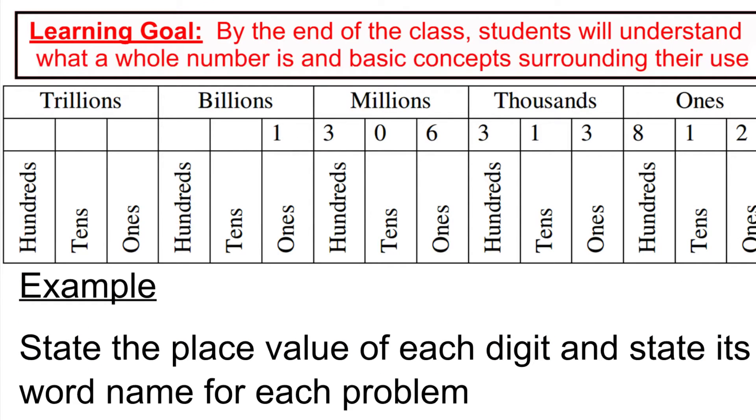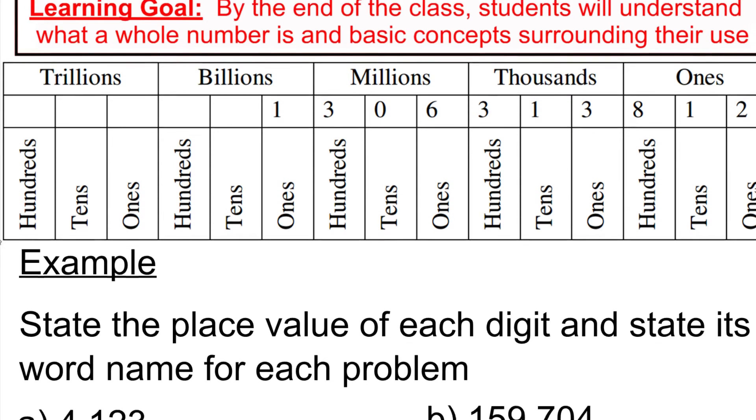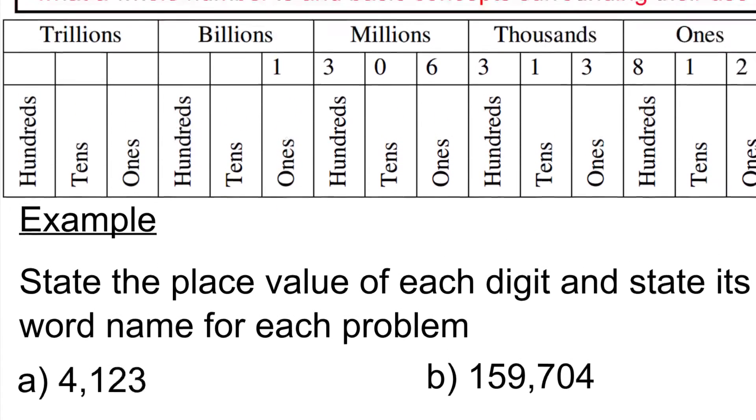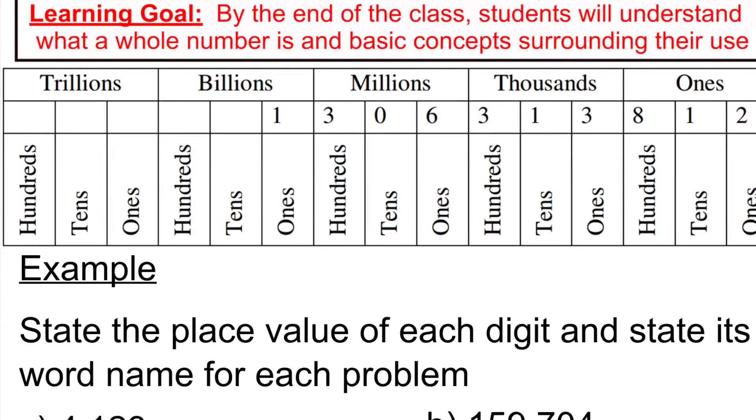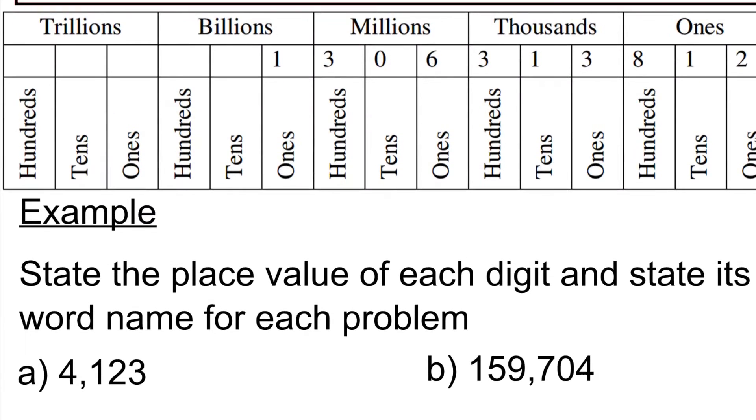So let's take a look at example where we are going to state the place value for each digit. And then we're going to also write out the name in words. So if I were to look at this and say state the place value of each digit. So here's what that means. That means I'm going to start with the four. When we're talking about digits, we're talking about numbers zero through nine that are just kind of somewhere in our larger number.